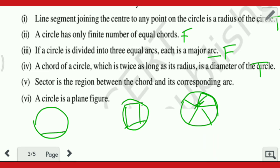Question five: sector is the region between the chord and its corresponding arc — this is FALSE. Why? Because sector is the region between an arc and two radii. Sector ki definition yeh hoti hai: arc se aur two radii se mil kar ke banta hai. So the correct definition involves arc and two radii, not chord.